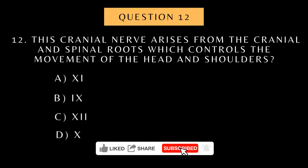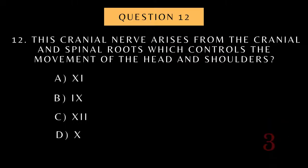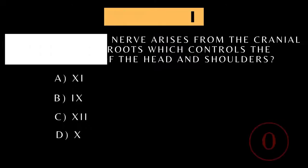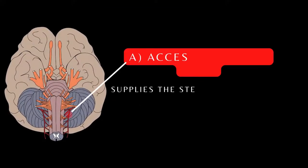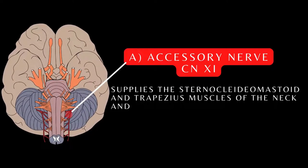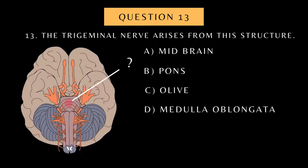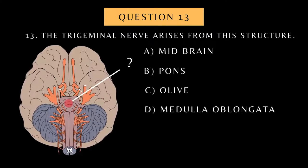This cranial nerve arises from the cranial and spinal roots, which controls the movement of the head and shoulders. The trigeminal nerve arises from this structure.